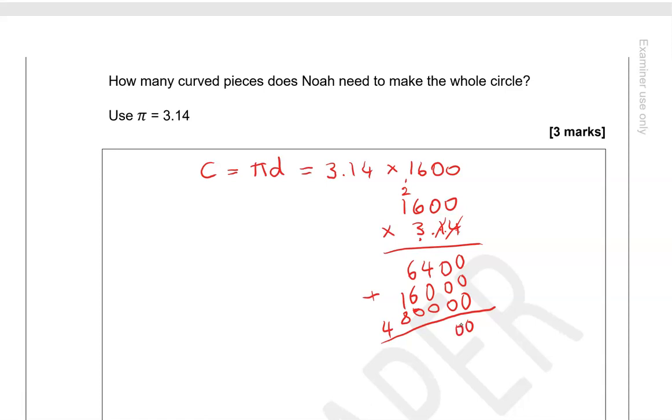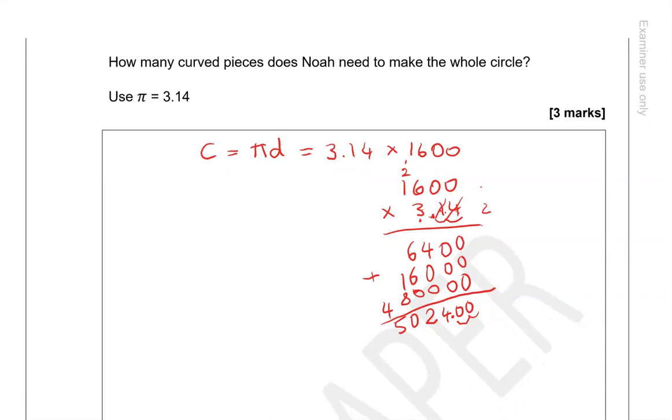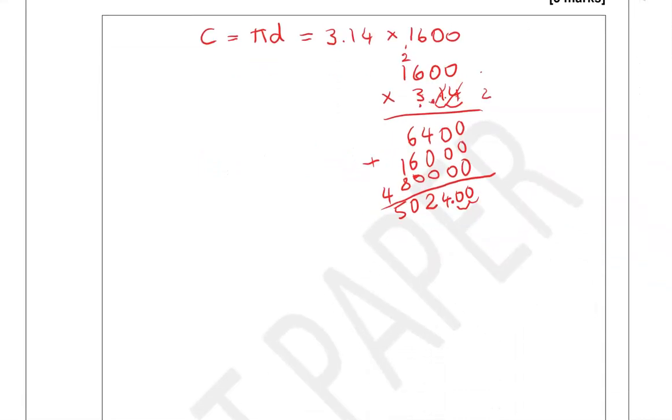0, 0, 4, 12, 10, 5. So counting the decimal places. In 1,600 we don't have any, but we have 2 in 3.14. So we're going to give the answer two decimal places. So going backwards, 1, 2. So that's where we're going to put the decimal point. So 5024.00, that's the same as 5024.